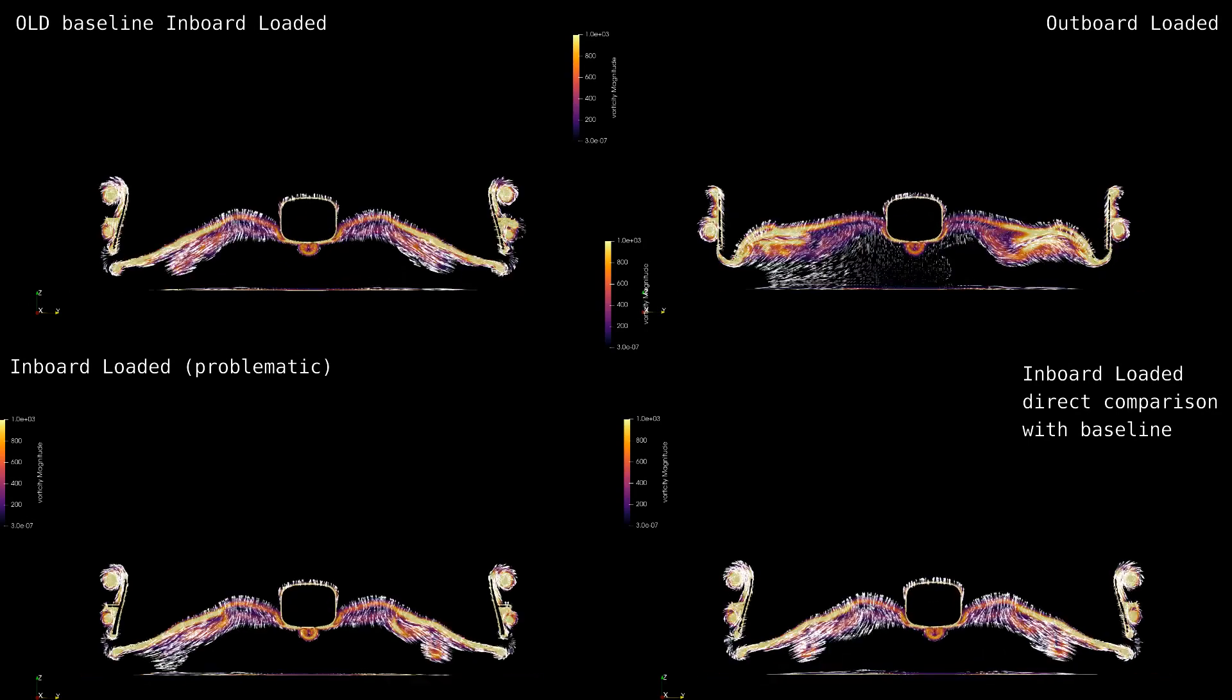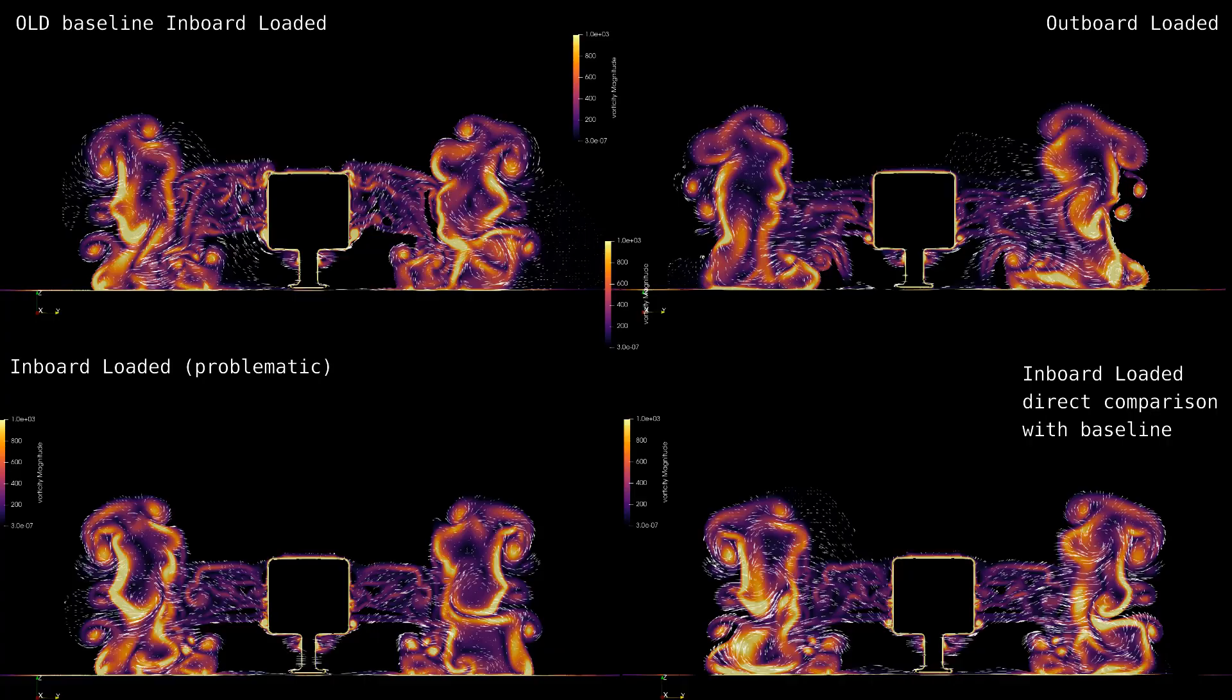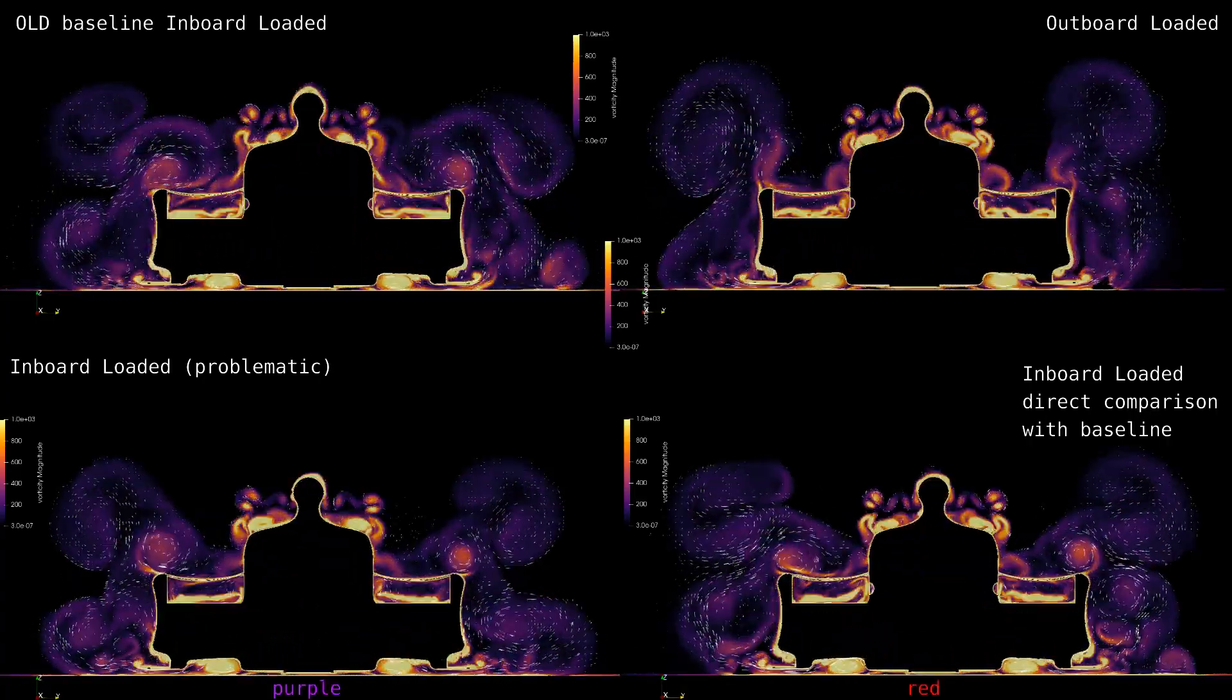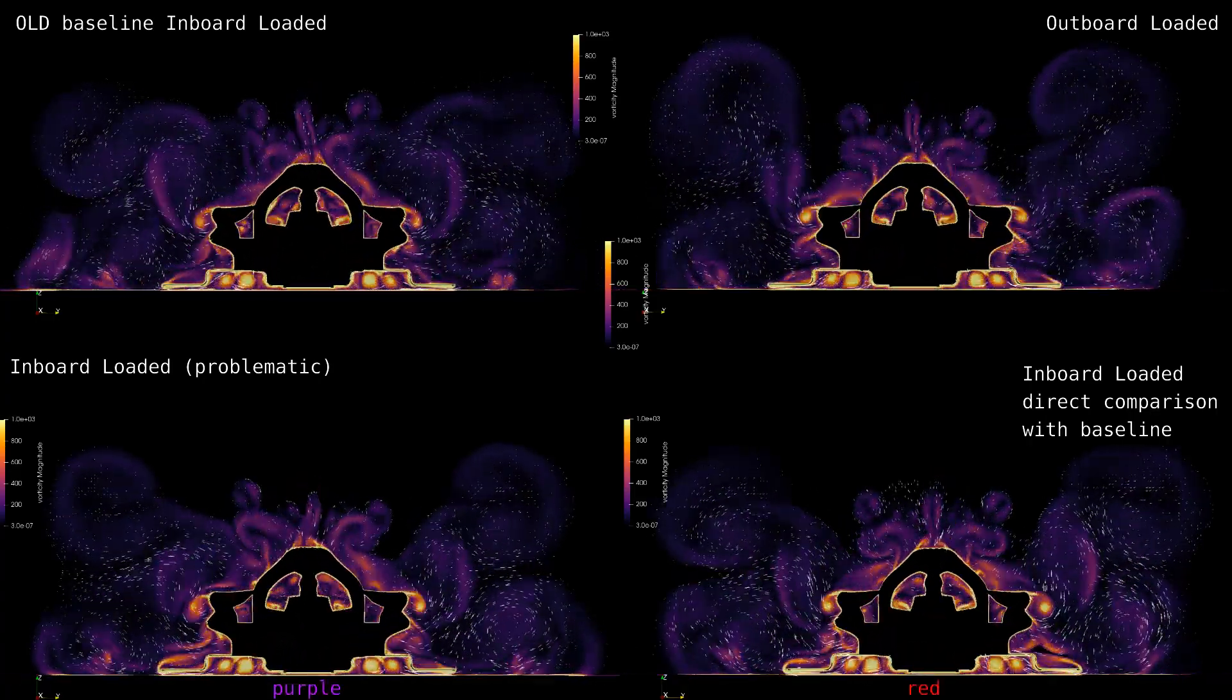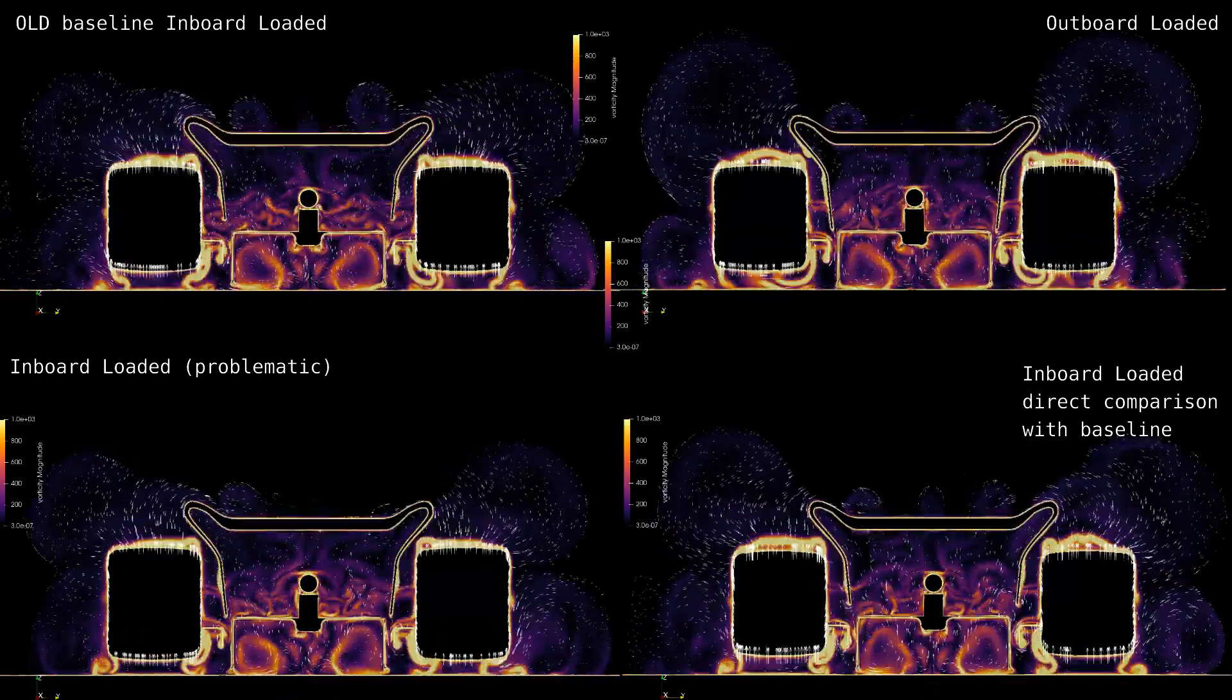The vorticity animation shows that there is a clear difference around the front of the chassis. Also, the animation corresponding to the red and purple plot has a flow structure that is far more coherent than I have seen on this model.